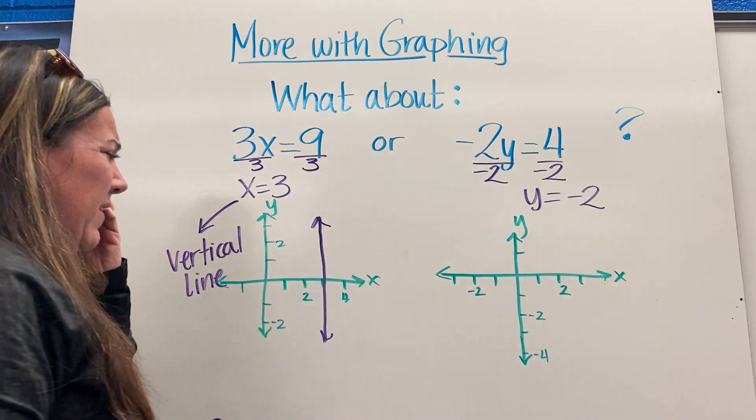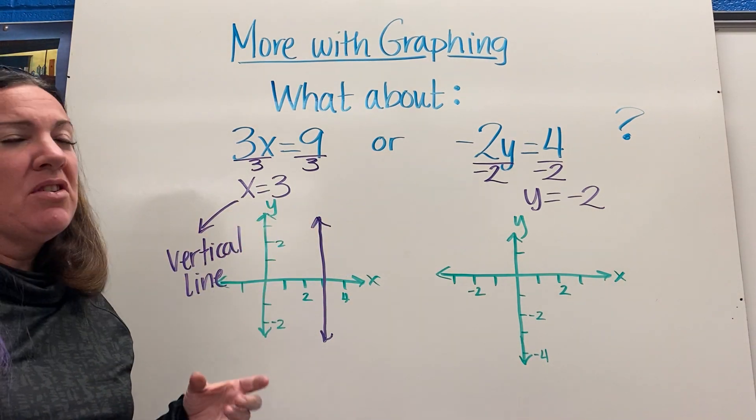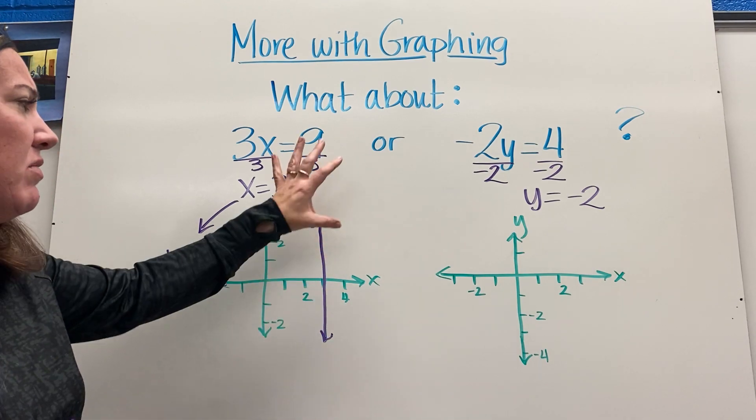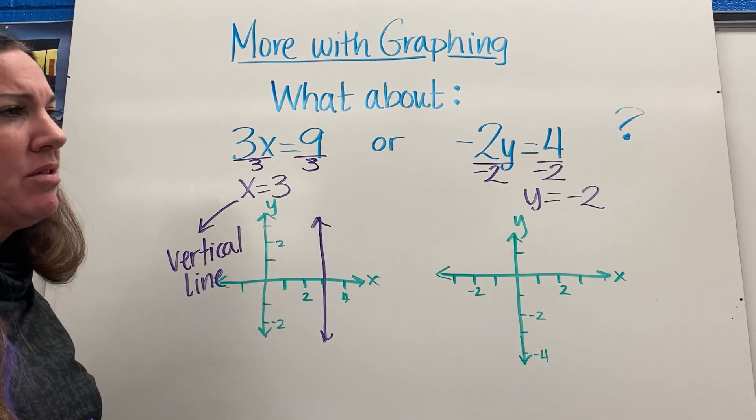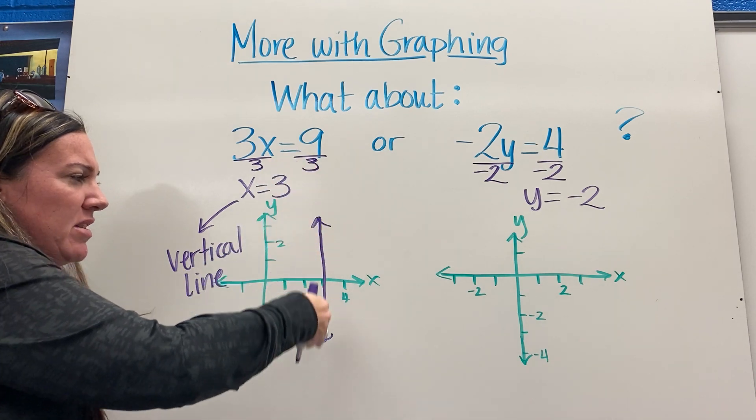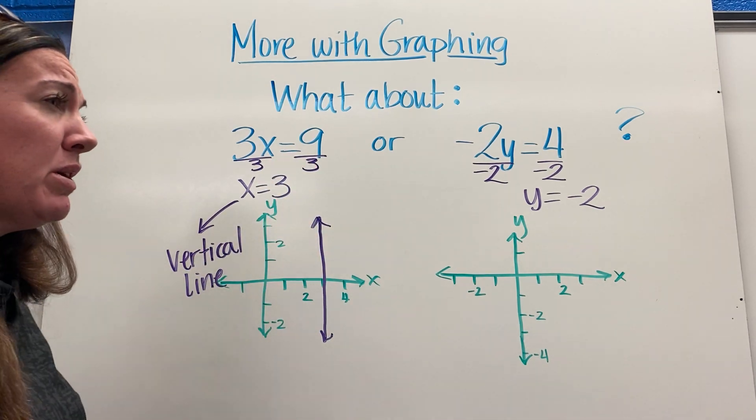I go to where x is 3 and I draw a line. Again, you almost just have to know it. Whatever's going on here, x is equal to 3, so any ordered pair that falls on that line, the x value is always 3.